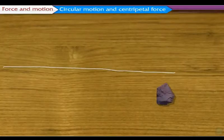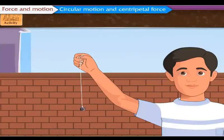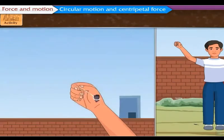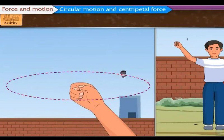Let us first perform an activity. Let us tie a stone to one end of a string. Now take the other end of the string in the hand and rotate the string so that the stone moves along a circle.